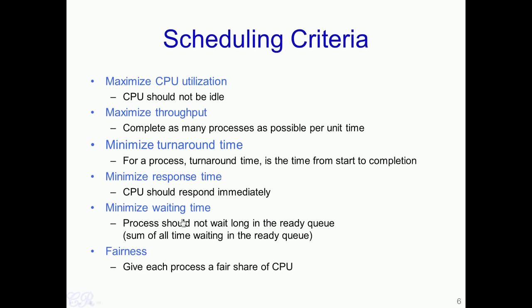Another criterion is waiting time — the time a process spends in the ready queue. Scheduling algorithms can be designed to minimize the average waiting time in the ready queue. The final criterion is fairness: the scheduler should ensure each process gets a fair share of the CPU based on some policy. It should not be the case that one process takes 90% of the CPU while all others share only 10%.